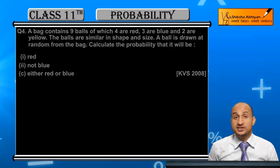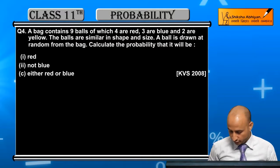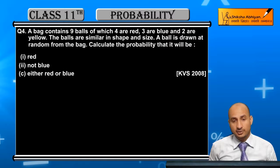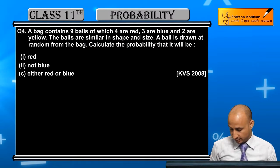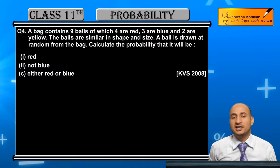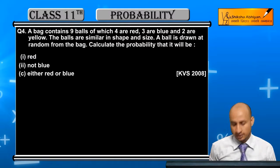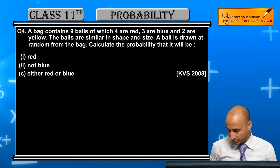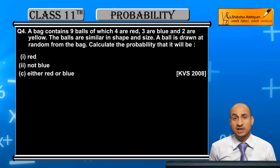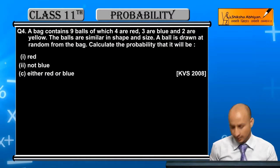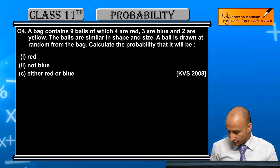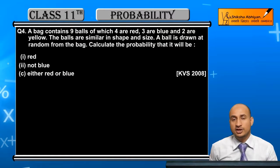Now student, we will see question number 4. Question 4: A bag contains 9 balls of which 4 are red, 3 are blue, and 2 are yellow. The balls are similar in shape and size. A ball is drawn at random from the bag. Calculate the probability that it will be: